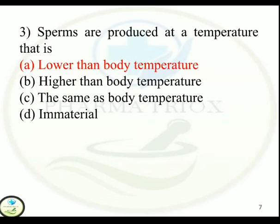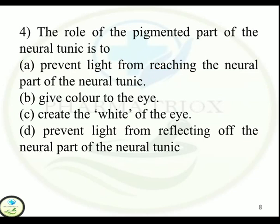Question 4: The role of the pigmented part of the neural tunic is to — Option A: Prevent light from reaching the neural part of the neural tunic. Option B: Give color to the eye. Option C: Create the white of the eye. Option D: Prevent light from reflecting off the neural part of the neural tunic. Correct answer is Option D.